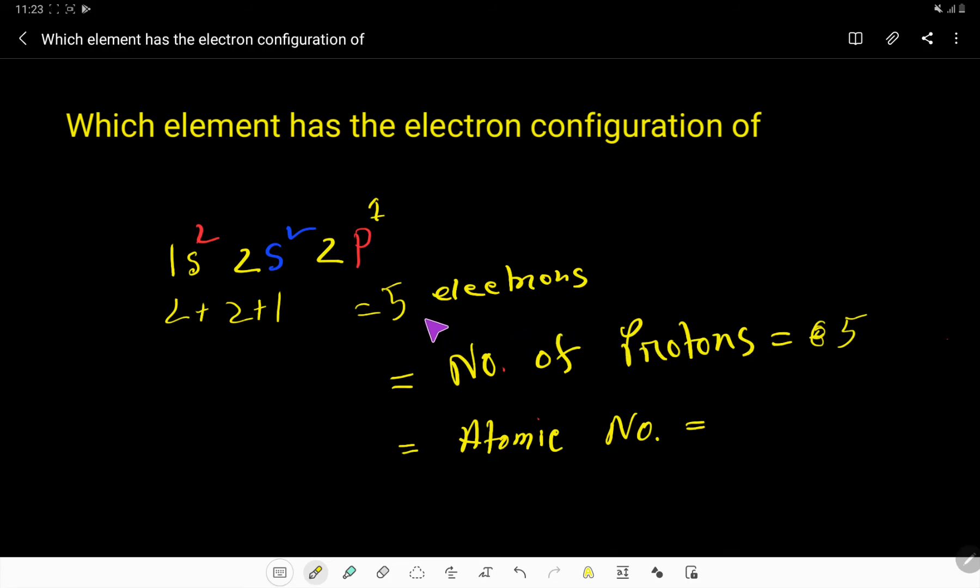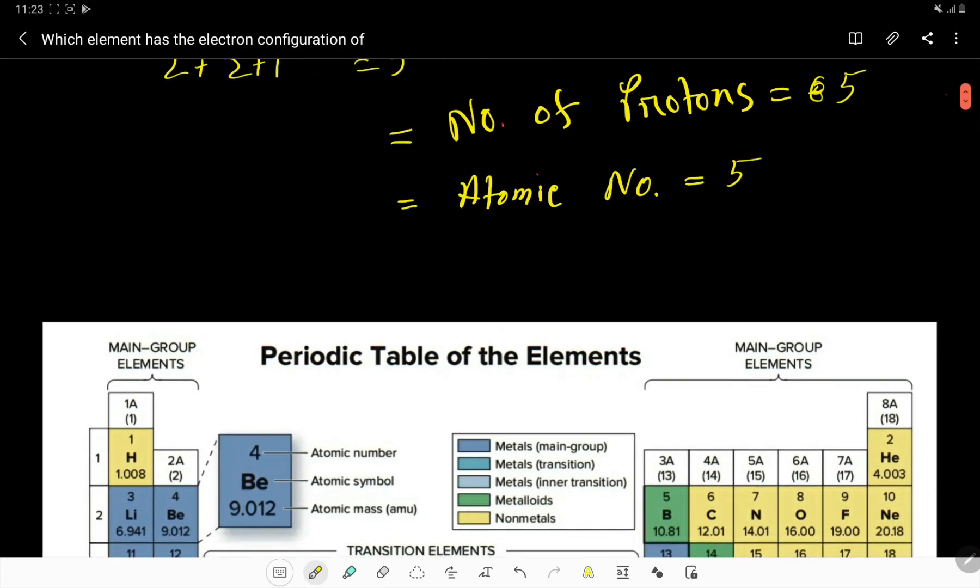Due to the presence of five electrons, we know that the number of protons is called atomic number. So this element's atomic number will be five. Now we have to use our periodic table to find out the element whose atomic number is five.